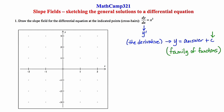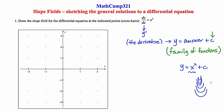For example, let's say you find the antiderivative and get y equals x squared plus c. We know that x squared is a parabola, but plus c means that parabola could be moved up or down depending on what c is. So we get a parabola that might be shifted up or down — this is the idea of a family of functions.